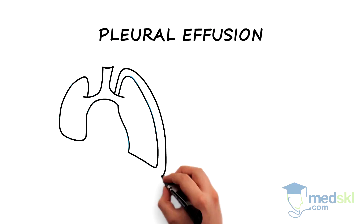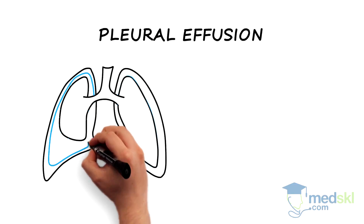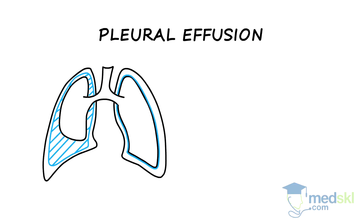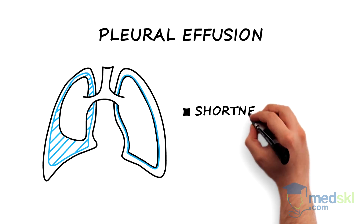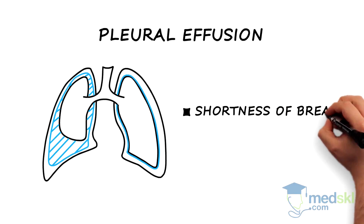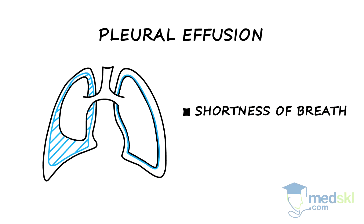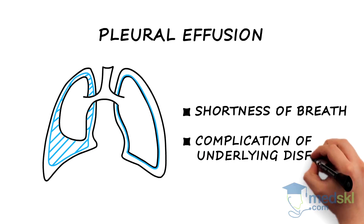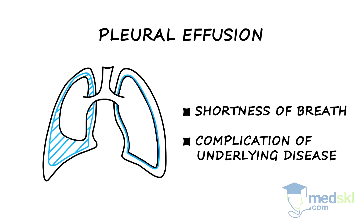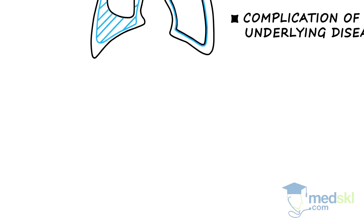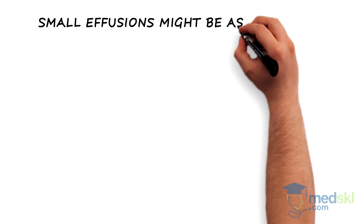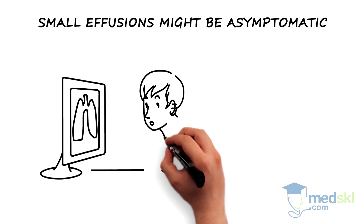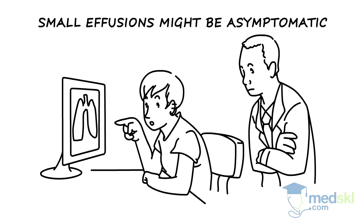Pleural effusion is a common clinical sign associated with a variety of clinical conditions. It usually presents as progressive shortness of breath and as a complication of a known underlying disease. Small effusions might be asymptomatic and incidentally detected on imaging studies.